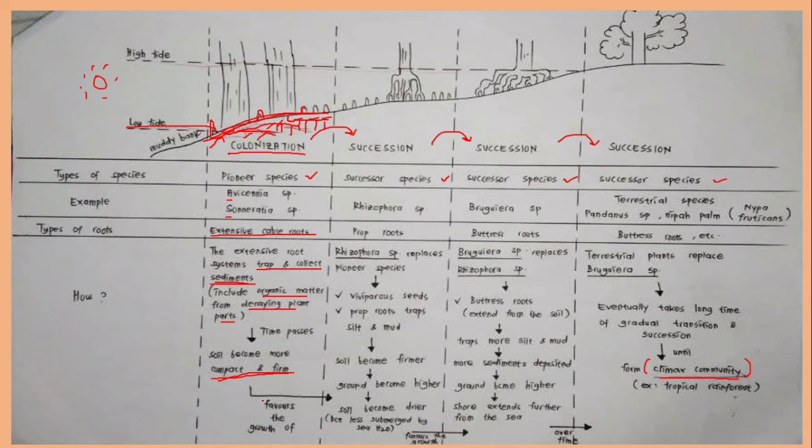But this soil, these conditions are favorable for the growth of successor species, that is Rhizophorus species. This Rhizophorus species have specialized type of root, that is prop root. This Rhizophorus species will replace Avicenia and Sonorotia species.